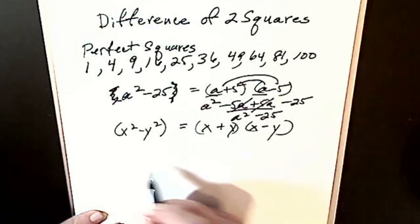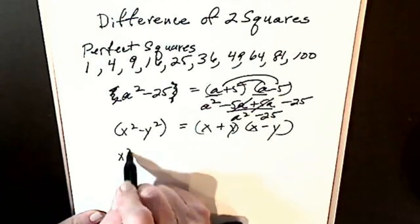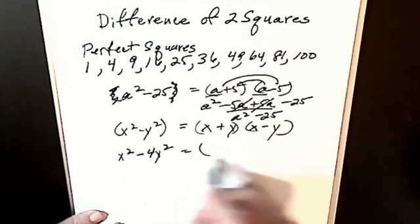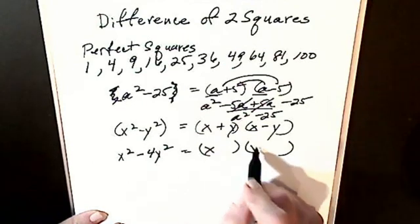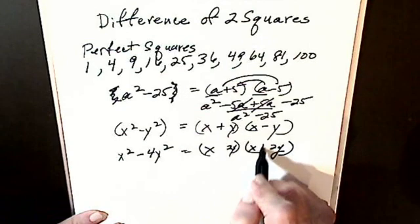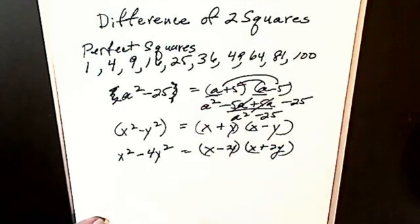We'll do another one. Let's make it x squared minus 4y squared. It's difference of two squares, so I have x and x, 2y, 2y, one is plus, one is minus.